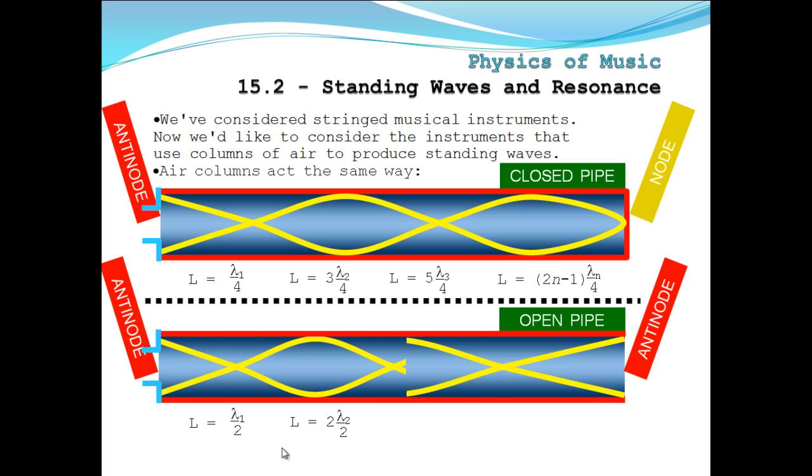And for the third, we have one wavelength and another half of a wavelength. So we get three halves of that wavelength. So for open pipes, the pattern is l equals n times lambda sub n over two.